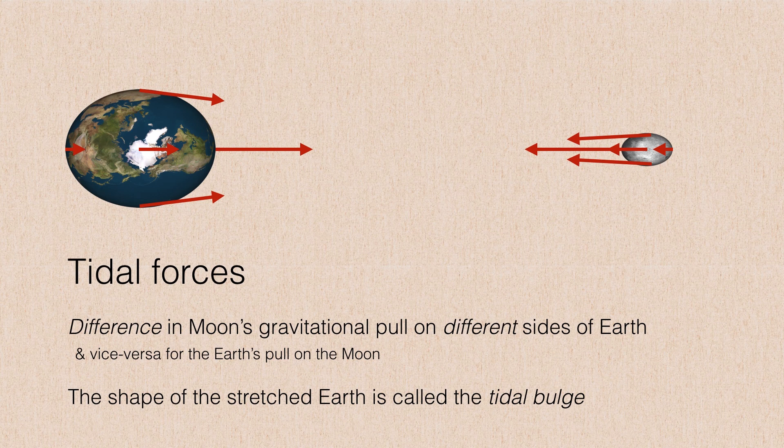And because we're talking about Newton's third law, that means there's always an equal and oppositely directed set of tidal forces from the Earth onto the Moon. So both the Earth and the Moon get stretched a little bit into a tidal bulge.